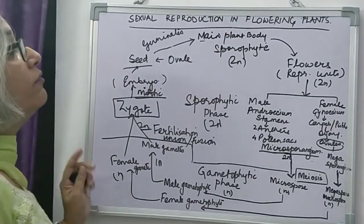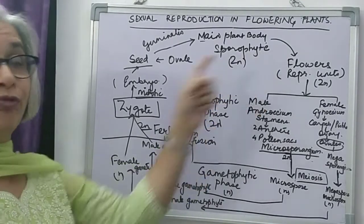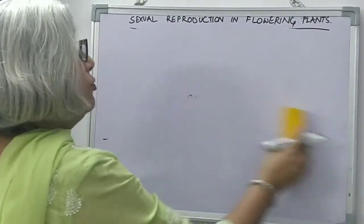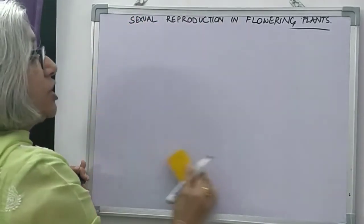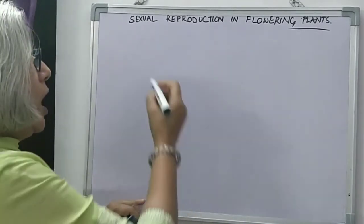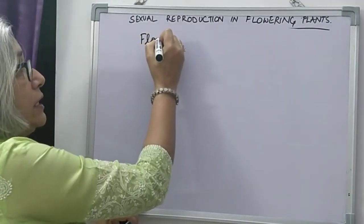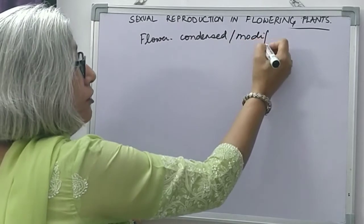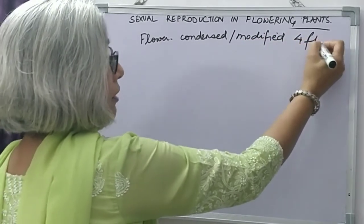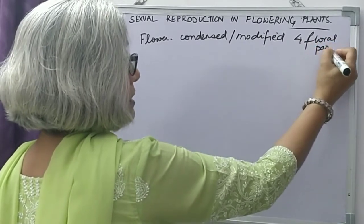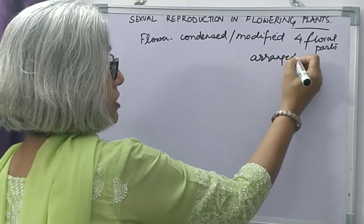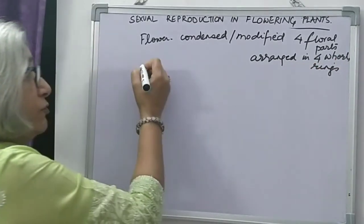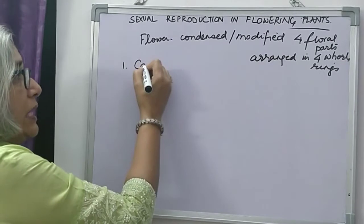Now we come to flowers. Flower is a reproductive structure of an angiosperm or a flowering plant. A flower is nothing but a condensed or modified shoot having four floral parts arranged in four whorls or rings. The outermost part is called the calyx.